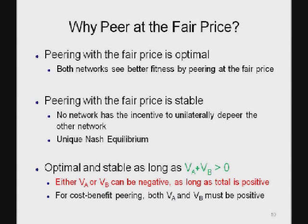Why would these two networks actually agree to peer at this price? We show in this paper that peering with the fair price is optimal — both networks see better fitness by peering and exchanging this price compared to not peering at all. Further, this fair price lies in a region where it is stable: it is a unique Nash equilibrium in the sense that no network has the incentive to unilaterally depeer the other. An important condition for this optimality and stability is that the aggregate value of the link, V_A plus V_B, must be greater than zero.